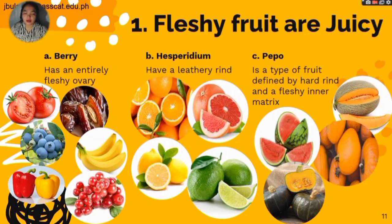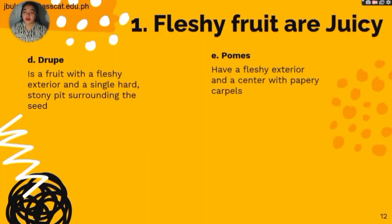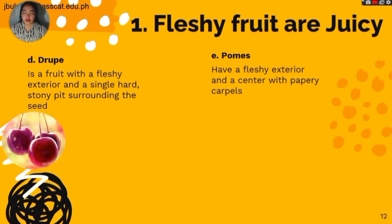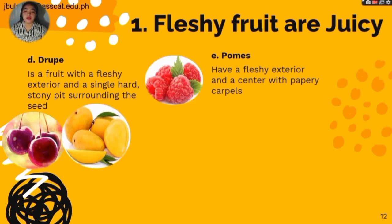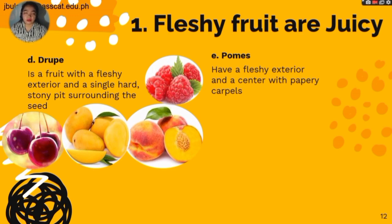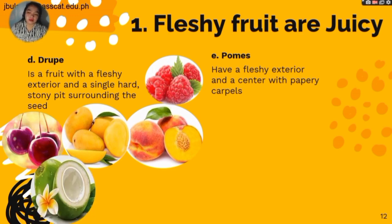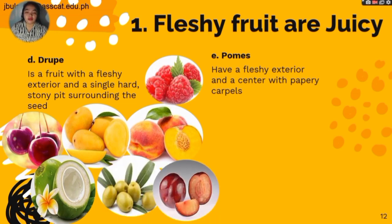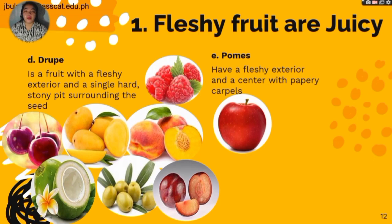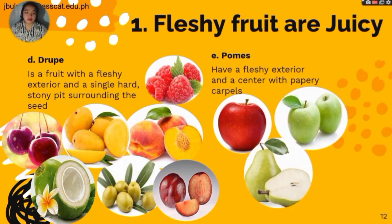The fourth fleshy fruit is the drupe, which is a fruit with a fleshy exterior and a single stony pit surrounding the seed. Examples are cherries, mangoes, cranberries, peach, coconut, and olive. The fifth fleshy fruit is the pome, which has a fleshy exterior with a center containing papery carpels. Examples are apples and pears.